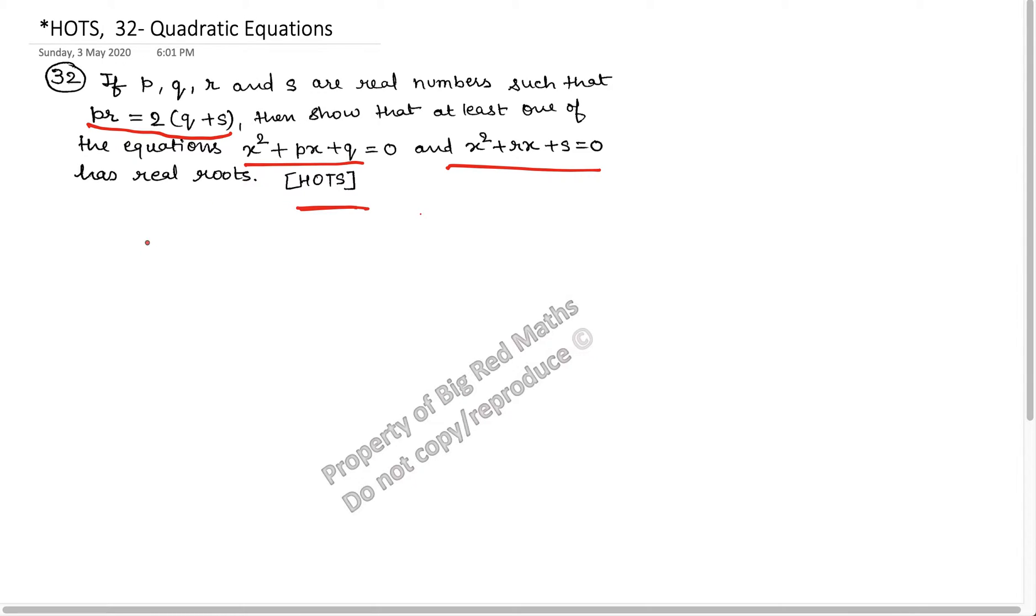So let's see. The condition given to us, let me call the condition one as C1. The condition given to us is that P into R is equal to 2 times of Q plus S. This is the condition given.